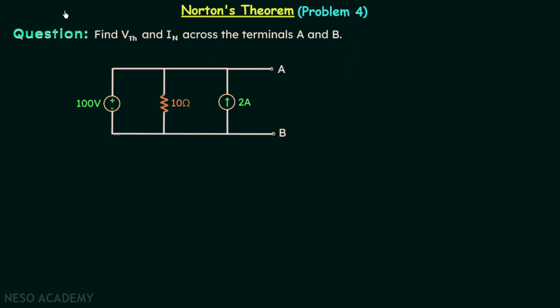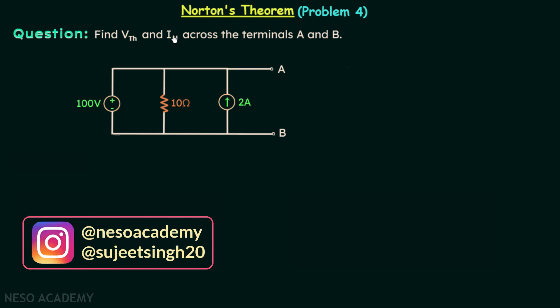In this lecture, we are going to solve problem number 4 on Norton's theorem. According to this problem, we need to find Vth and In across the terminals A and B.